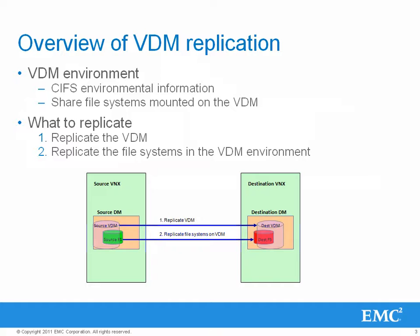In order to replicate a VDM environment, first the VDM must be replicated. The destination VDM requires up-to-date information about the environment for it to share its file system should it become online if a disaster event happens at the source site. After the VDM is replicated, file systems in the VDM environment can then be replicated in their own replication sessions. The VDM on the source VNX needs to be first replicated to the destination VNX before replicating the file systems mounted on the source VDM.